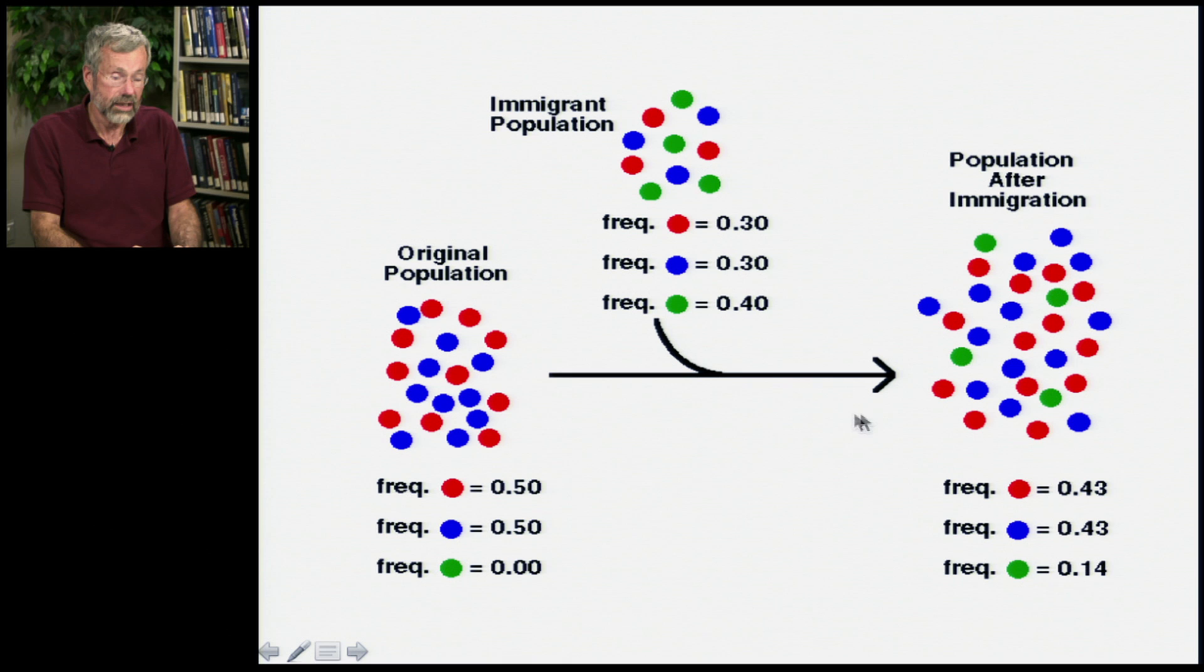then our original population now has changed. We have an increase in this green allele because of immigration bringing the new genes into the population. That's gene flow.